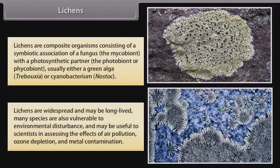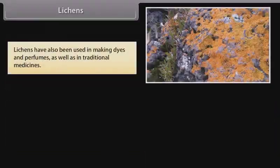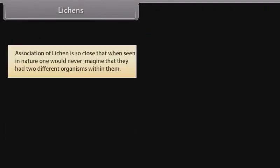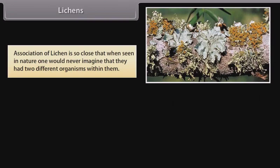Many species are also vulnerable to environmental disturbance and may be useful to scientists in assessing the effects of air pollution, ozone depletion, and metal contamination. Lichens have also been used in making dyes and perfumes, as well as in traditional medicines. Algae prepare food for fungi, and fungi provide shelter and absorb mineral nutrients and water for their partner. The association of lichen is so close that when seen in nature, one would never imagine that they had two different organisms within them.